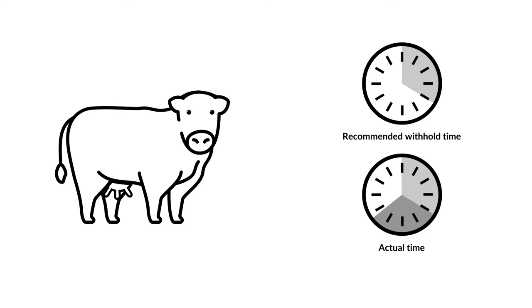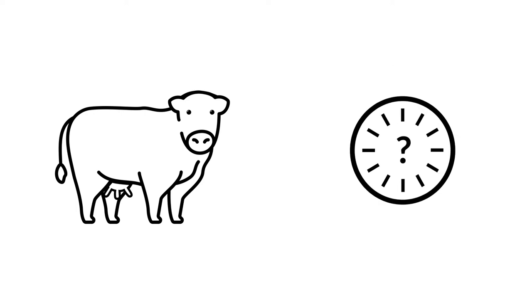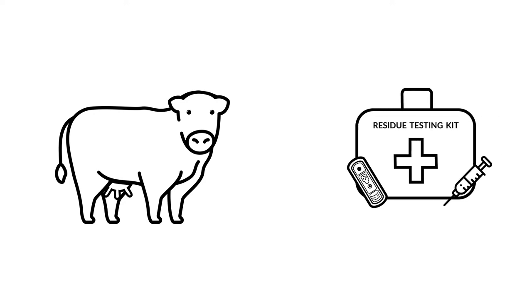If a cow is treated extra-label, then the withhold time is unknown. Once a cow is treated extra-label, the cow typically retains antibiotic drugs longer than the label withhold time. The only way to feel confident a cow is ready to be put back into the milking line is to test the milk with a residue test kit designed for the treatment drug.